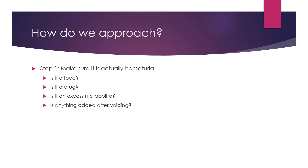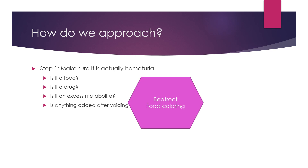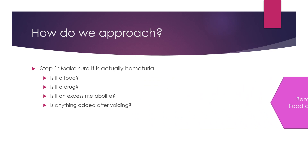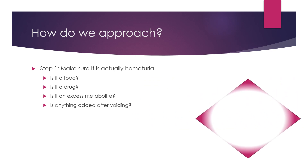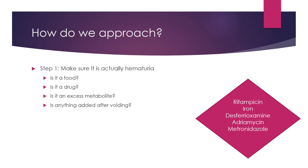Before you start evaluating, make sure it is actually hematuria. Is it a food the child has taken that is changing the color of urine? The most common in our setting is beetroot and any food coloring or food dyes. If not food, could it be a drug? Drugs that commonly cause this include rifampicin, iron, desferioxamine, and adriamycin.